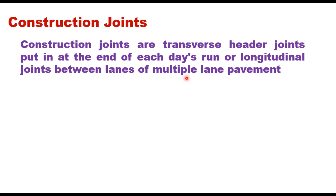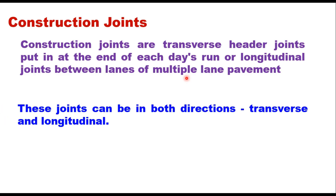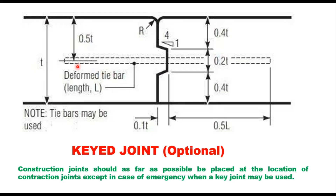A construction joint is created when concrete slabs are constructed at different times, and these joints can be in both directions — transverse and longitudinal. Transverse construction joints which do not occur at regular joint locations are generally tied with tie bars to prevent movement, and this is important in multi-lane highways. A key may be provided in such cases to ensure load transfer because tie bars are not adequate for this purpose. The total height here is 0.2 times Tt, where Tt is the slab thickness, and these key joints are used when construction joints are not placed at the location of contraction joints.